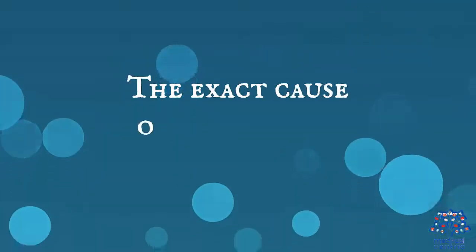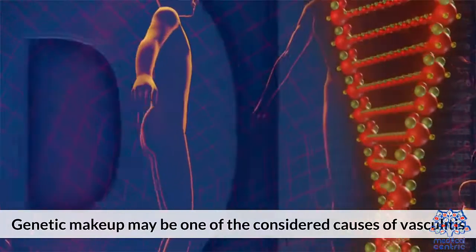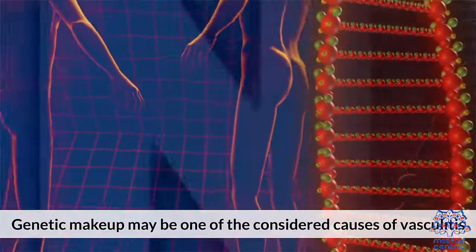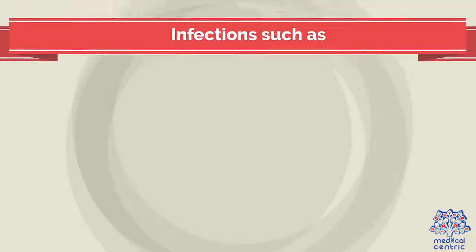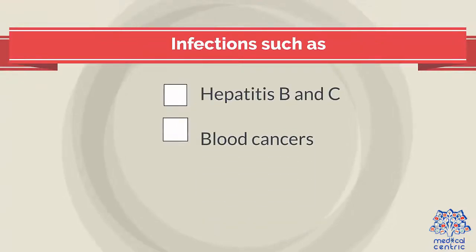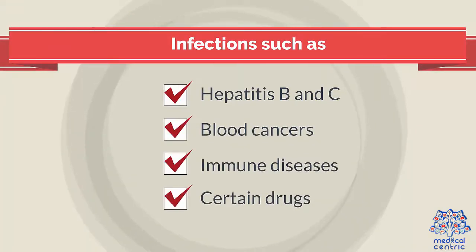Causes. The exact cause of vasculitis is unknown. Genetic makeup may be one of the considered causes of vasculitis. Autoimmune disorder — a condition where a self-induced attack is placed on the molecules, cells, or tissue of the body — infections such as hepatitis B and C, blood cancers, immune diseases, and a reaction to certain drugs may activate vasculitis.